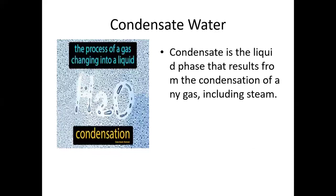The last water type to understand is condensate water, which is a product of condensation — the process where gas turns back into liquid. Condensate water is the liquid phase that results from the condensation of any gas, including steam. This is a product of your condenser: process steam, after flowing throughout the system, is converted back into liquid. This condensate water is then added to our make-up water supply to feed back into the boiler.